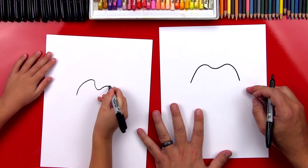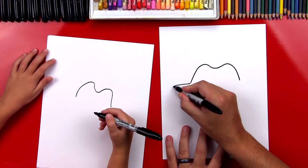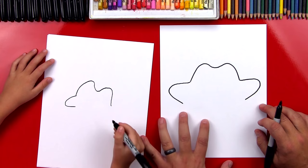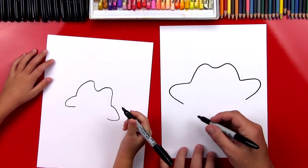Now we're gonna draw his arms. So they're gonna come out to the side like this and then back in. And we'll do that on both sides. Like that. And then one on the other side.